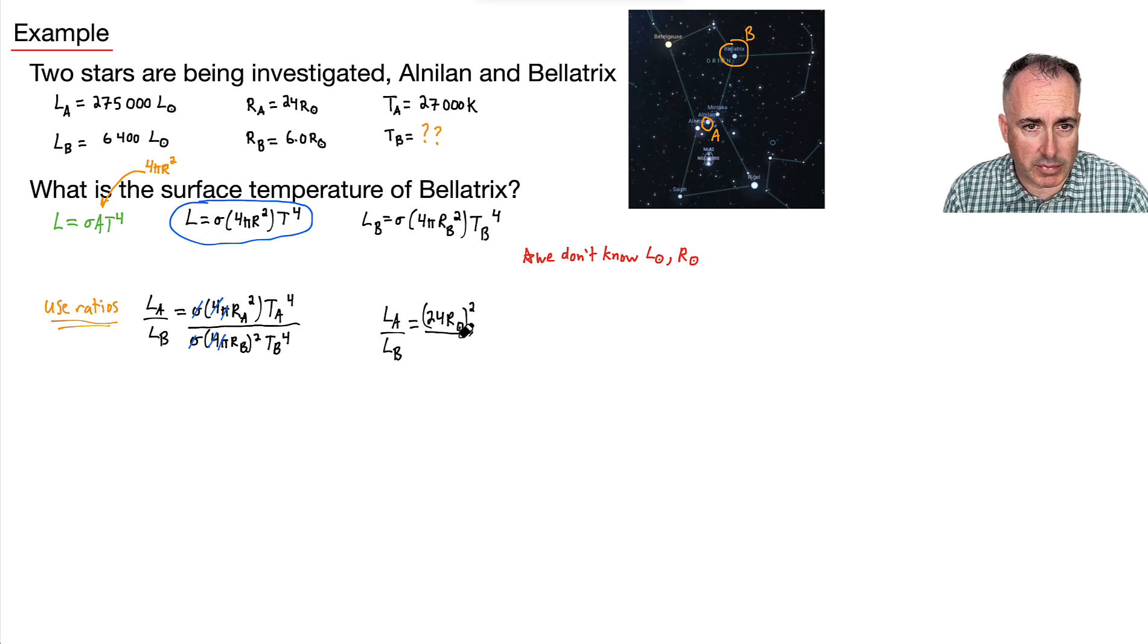All that over RB squared, so that's six times the radius of the sun squared. All that times temperature of A, which is 27,000 to the fourth. All that over TB to the fourth.